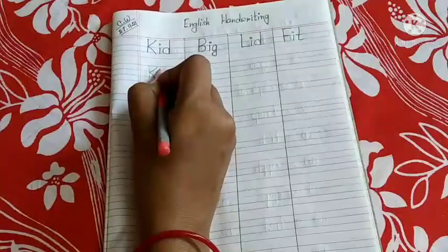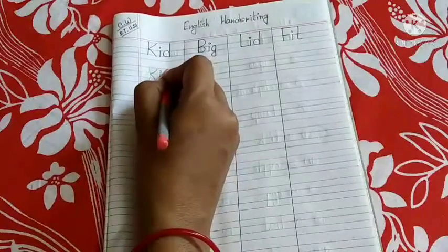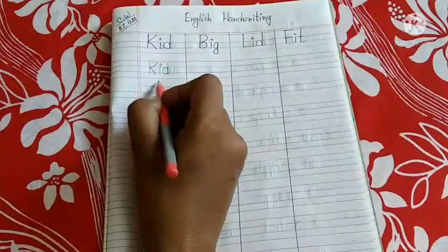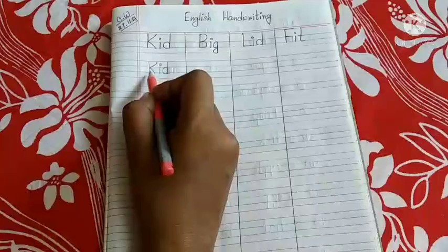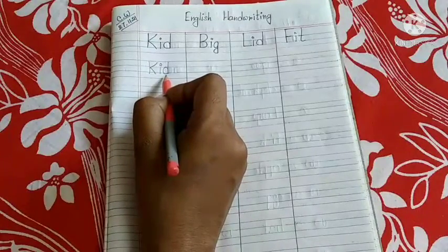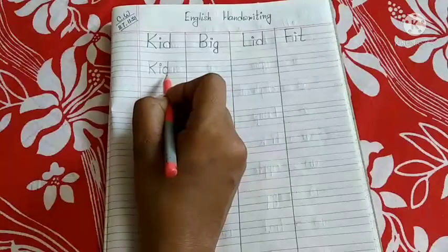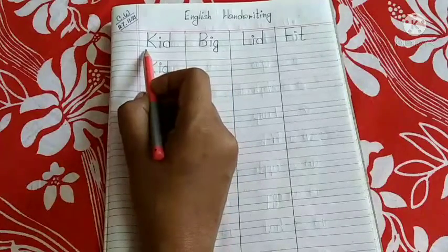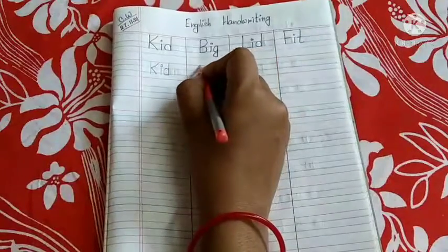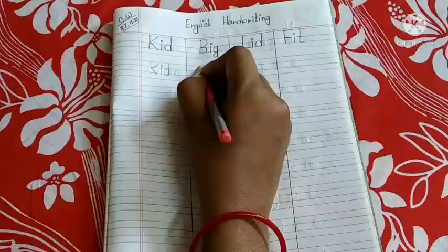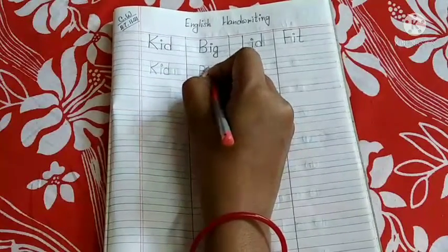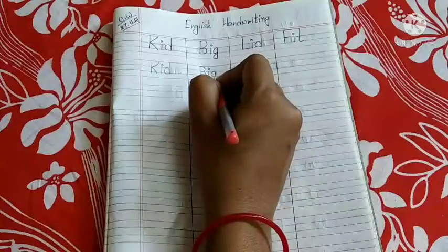K, I, D — kid. So you can see here, K in capital letter, I small letter and D small letter. Only the first letter you have to write capital. B, I, G — big.